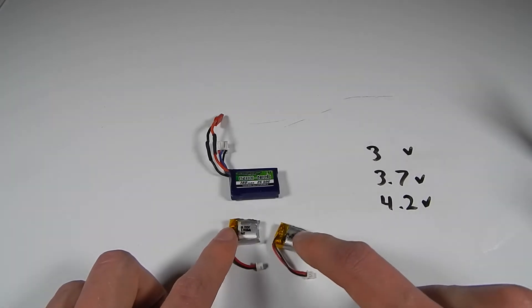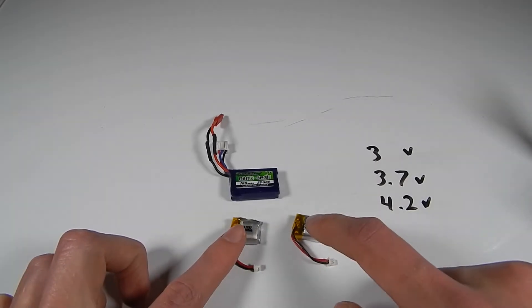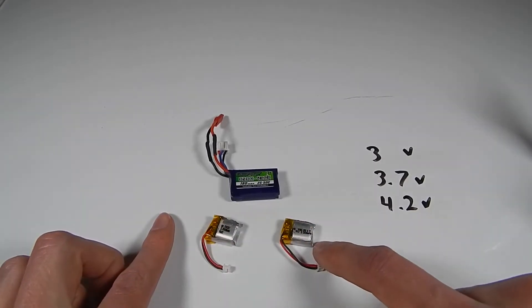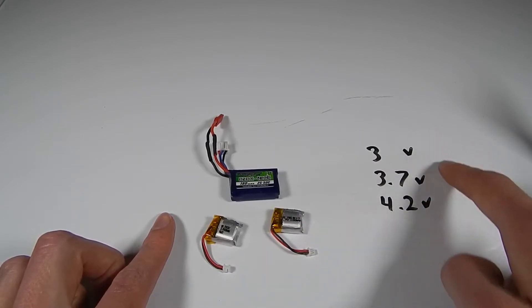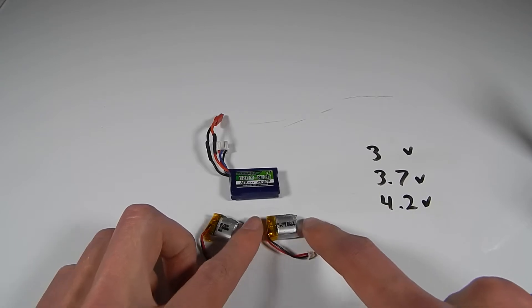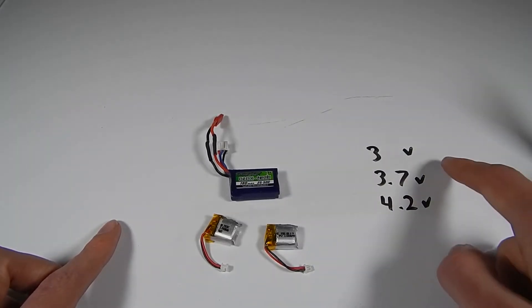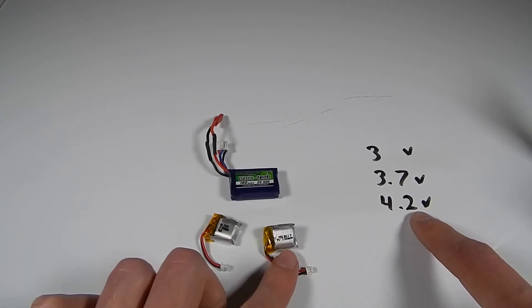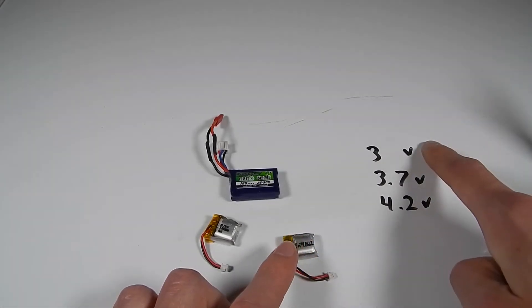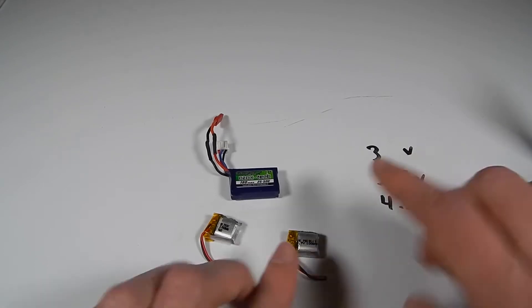These are what's known as 1S LiPo batteries, which means one cell. These are a single lithium polymer battery cell and on the side here you can see some voltages written down. 3.7V is the nominal voltage for any singular LiPo cell at half charge. 4.2V is the full charge of a single LiPo cell and 3V is the discharge value. If a LiPo single cell ever gets below 3V, that cell is dead, it is gone.